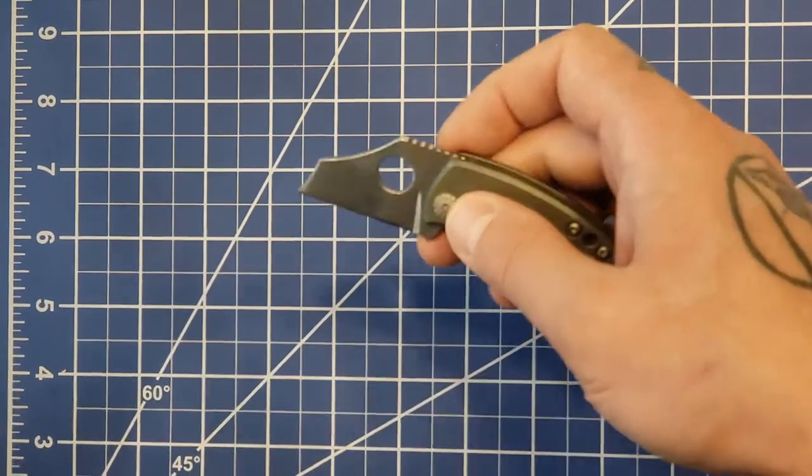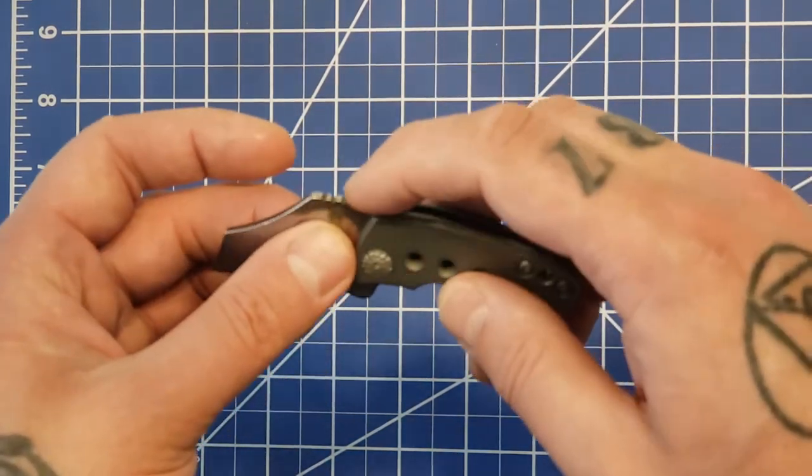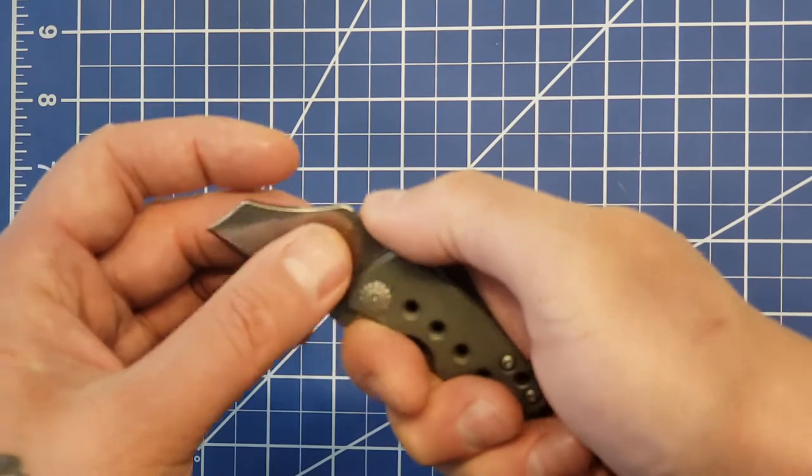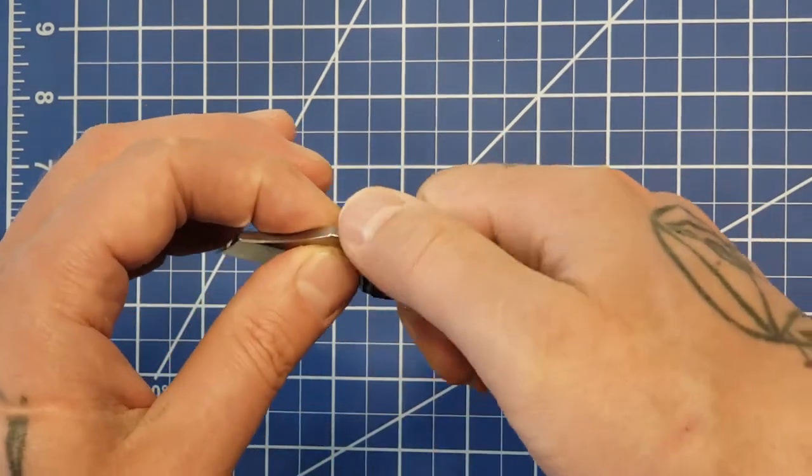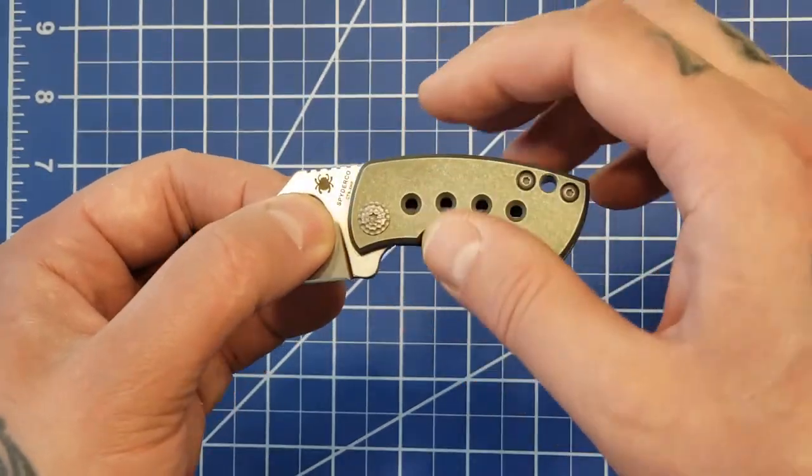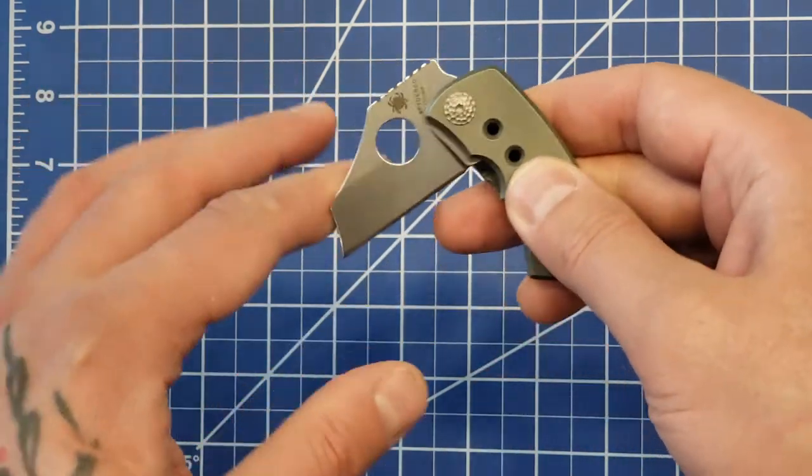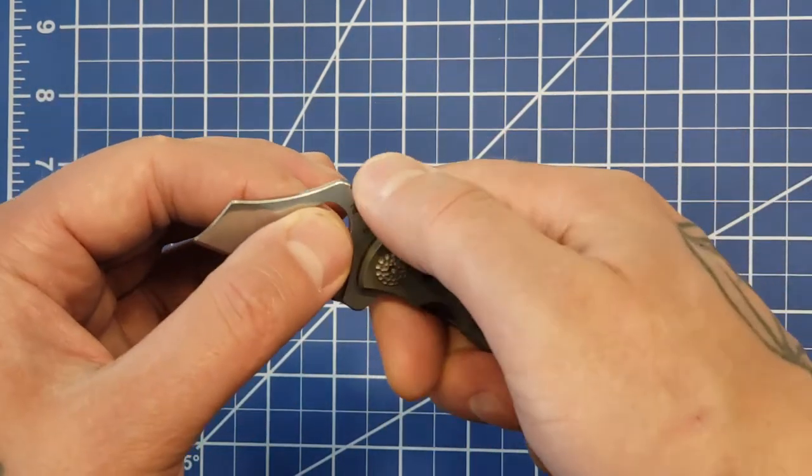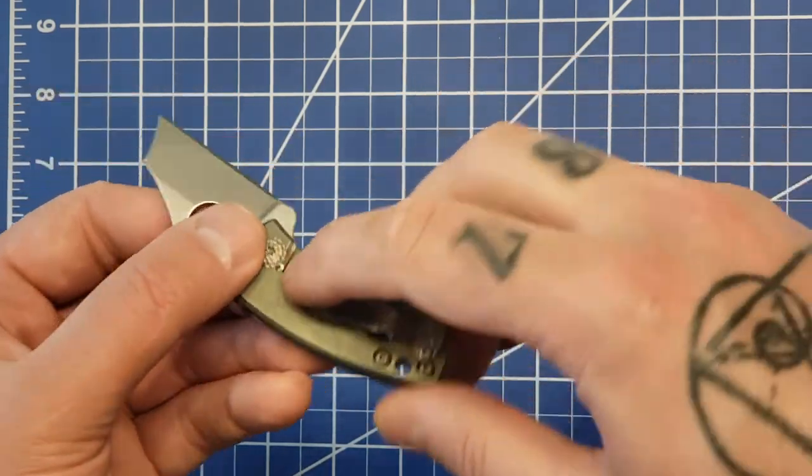Nice thumb hole opening. The jimping is a great addition. It's a little sharp, not gonna cut you, but you can tell it's like more of an additional blade addition. It was an afterthought, but it is nice to have.